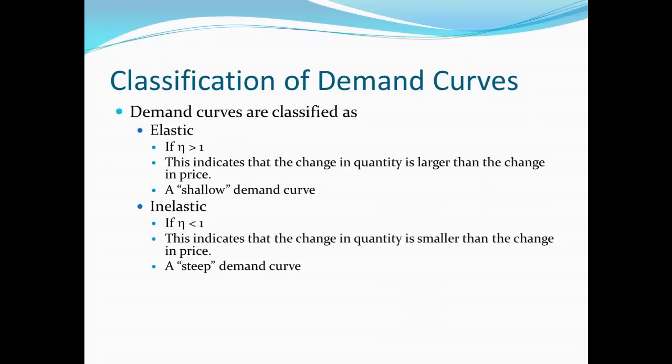The other category, or another category, would be an inelastic demand curve. This happens if the elasticity that we measure is less than 1. In that case, that suggests the change in quantity is smaller than the change in price. So we can have a relatively large change in prices and not see a lot of change in how much people are willing to buy of this particular good. In that case, when we draw the demand curve, it will tend to be relatively steep. In the extreme case, it could be virtually vertical.